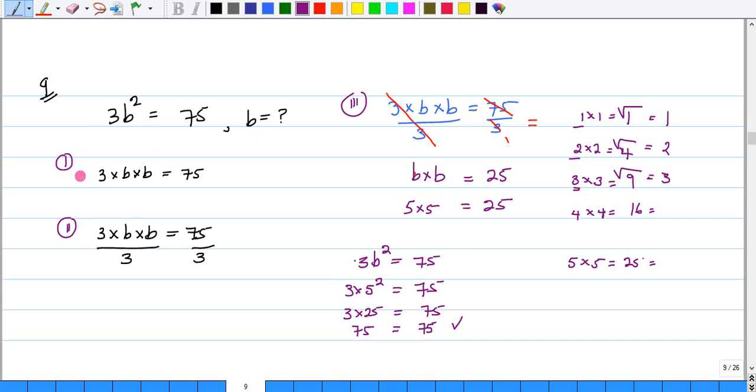Now, what does this mean? 3b squared. 3b squared means 3 times b times b is equal to 75.